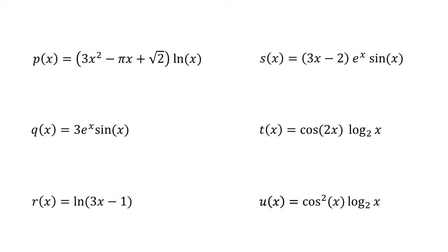How about p? There are a lot of terms here, but the parentheses can help you recognize that p is made up of two functions: 3x squared minus pi x plus root 2, times the natural log of x. And you probably know how to compute the derivative of each of these. How about q? Not having parentheses makes it trickier to recognize when two functions are being multiplied, and at first it might look like this has three terms rather than two. But you can treat 3e to the x as one function and sin as another, and you can use the product rule here.